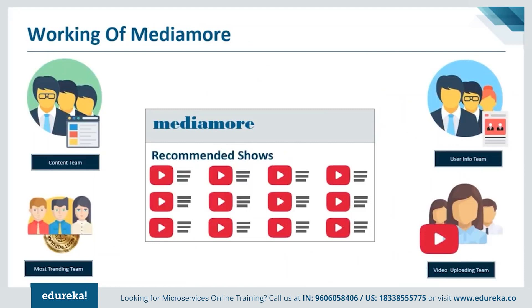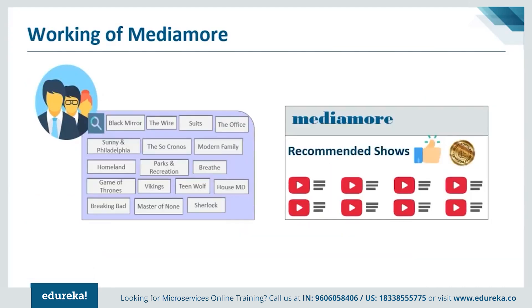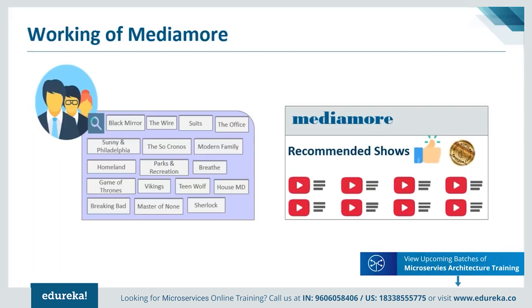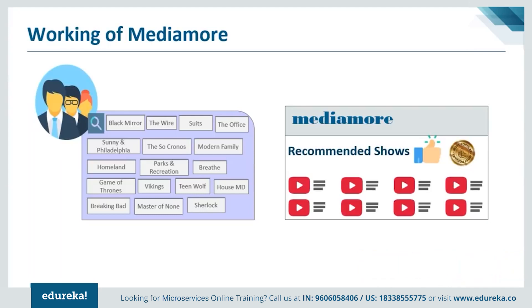The developers are divided into small agile teams such as content team, video uploading team, most trending team, search team, etc. Each team has its own functionalities — the content team consists of millions of TV shows, the video uploading team uploads all the content into the application, and the most trending team houses the most trending shows according to geographical locations. These small teams relate each piece of content with metadata that describes the searched content. That metadata is fed into the search function microservice, which ensures Alice's search results are captured in the content catalog. The most trending microservice captures the trending content among all MediaMore users according to their geographical locations.